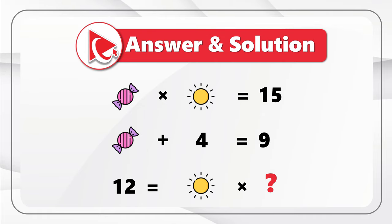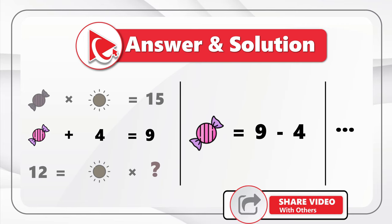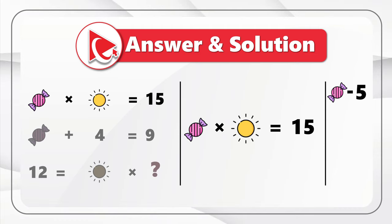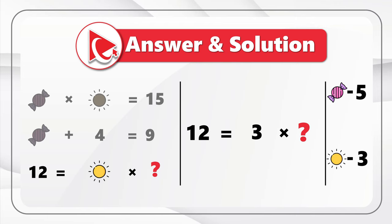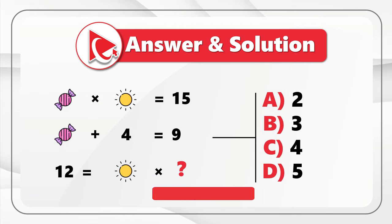Starting with the middle expression: candy plus 4 equals 9, so candy equals 9 minus 4, which is 5. Now substituting candy into the top expression: 5 multiplied by sun equals 15, so sun equals 3. Finally, substituting sun into the last expression: 12 equals 3 multiplied by question mark, so question mark equals 12 divided by 3 — wait, 12 divided by 3 equals 4. So the correct answer is choice C — 4. If you came up with a different answer, please post your solution in the comments.